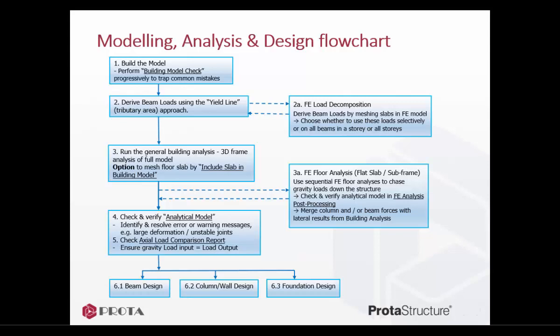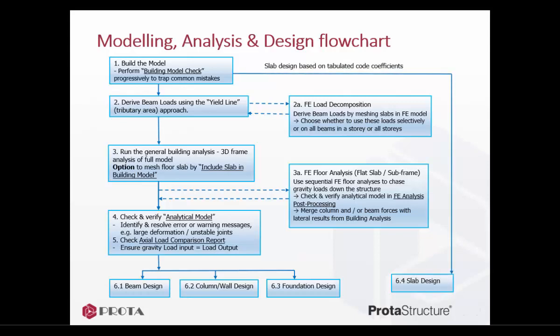Check and verify the analytical model in the FE analysis post-processor. You can then choose to merge or combine the gravity results for columns and/or beams from the FE floor analysis with the lateral results from building analysis. After merging, the FE floor analysis results will be used in member design. After building the model, we can straightaway design the slab using the tabulated code coefficient or yield line method. Alternatively, for slab design, we can use the same FE floor analysis to generate alternative slab design forces, since the slabs are meshed in the finite element model.